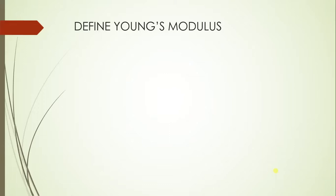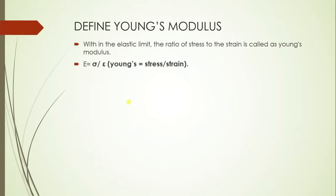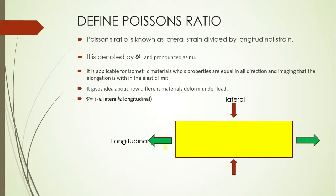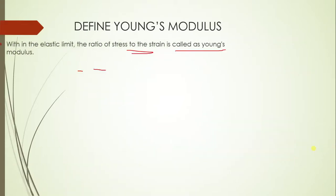Young's modulus is one of the three important elastic moduli, indicated by the symbol E. Mathematically, within the elastic limit, Young's modulus is the ratio of stress to strain: E = σ/ε. Whenever you apply a tensile load on a member — pulling it outward — Young's modulus characterizes its response.